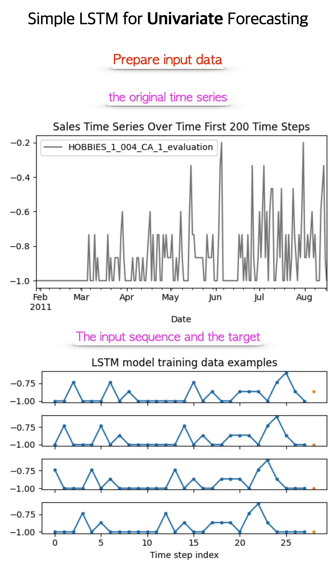Step 1 is to reorganize the data from the original one-dimensional form to the matrix format so a recurrent neural network model can use it. We're using a length of 28 days as input sequence length and the value on the 29th day as the target.